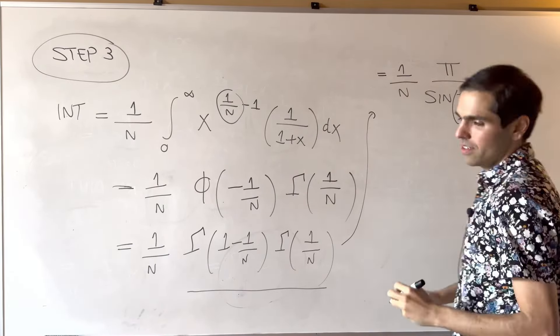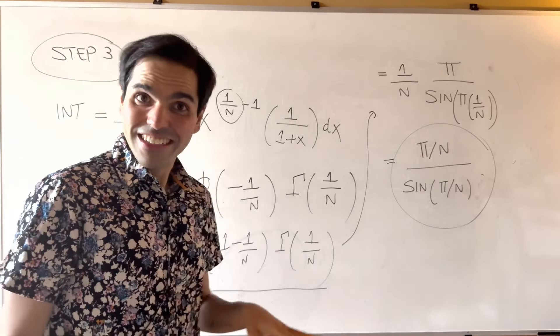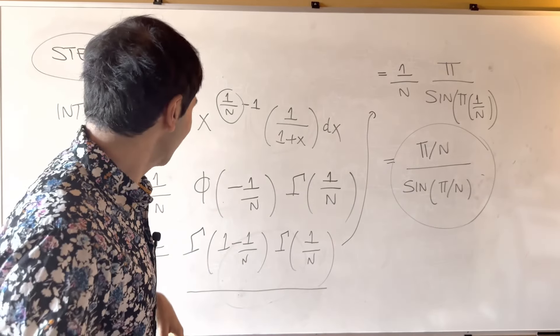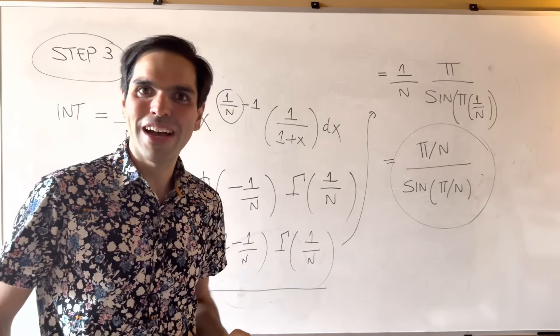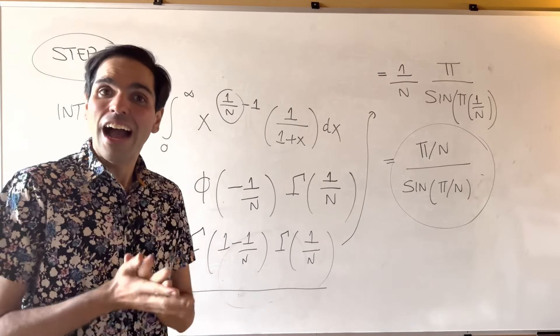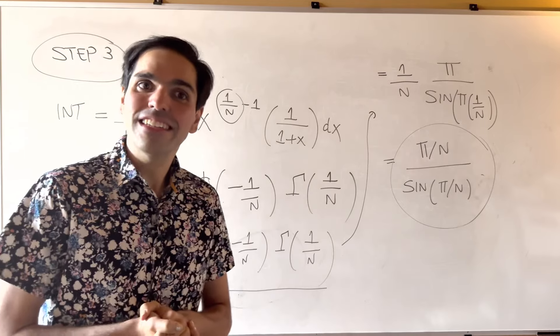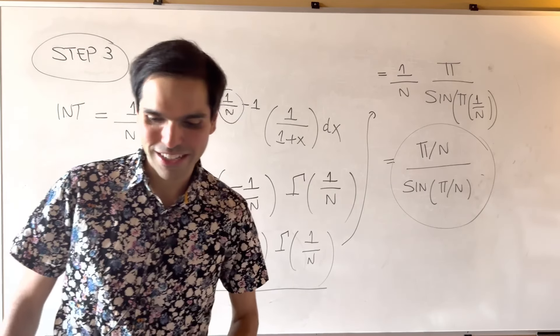The answer is pi over n over sine of pi over n. Isn't that really elegant? That's really one of the beautiful things about Ramanujan's Master Theorem — truly a genius. I hope you liked this. If you want to see more math, please make sure to subscribe to my channel. Thank you very much.